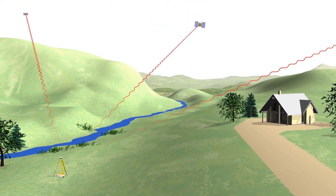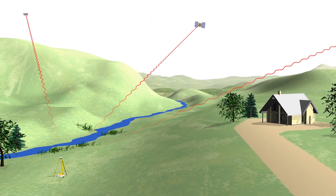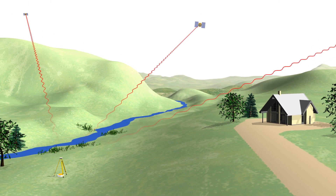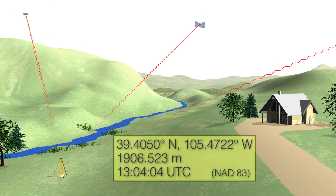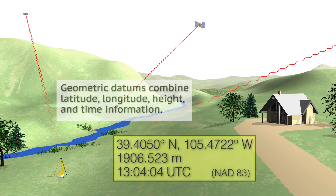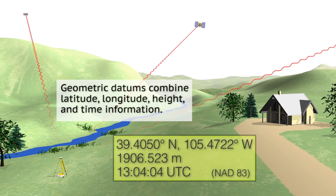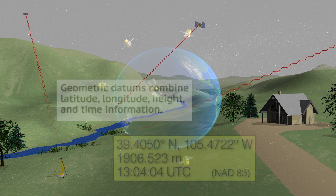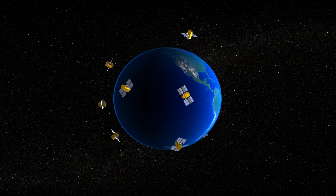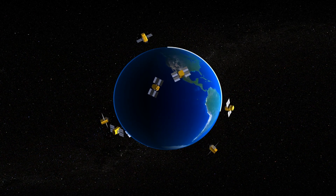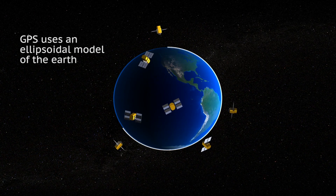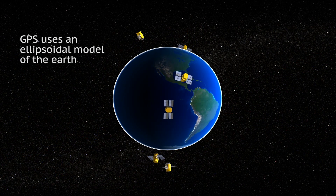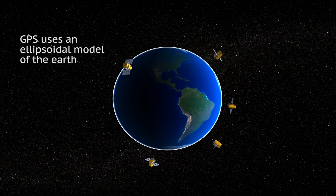Now, thanks to the global positioning system, commonly known as GPS, and some other space age techniques, we are no longer limited to separate horizontal and vertical datums. Today, we have access to geometric datums, which combine latitude, longitude, height, and time information. The height information derived from GPS is relative to something called an ellipsoidal model of the Earth, instead of to sea level.